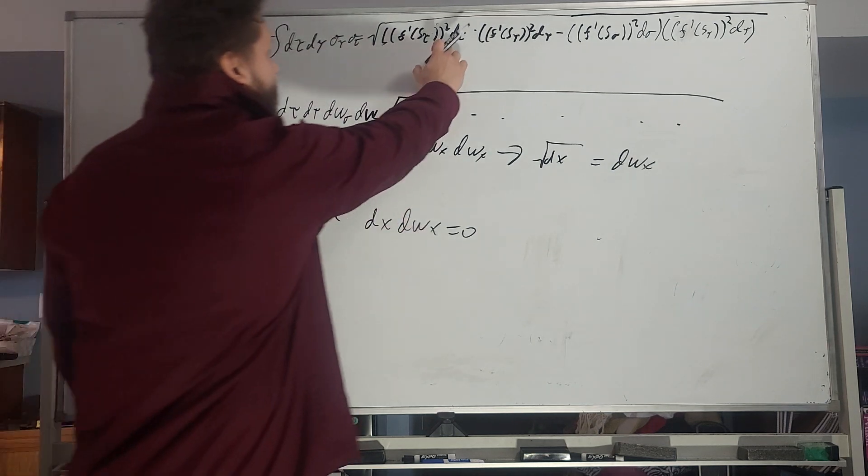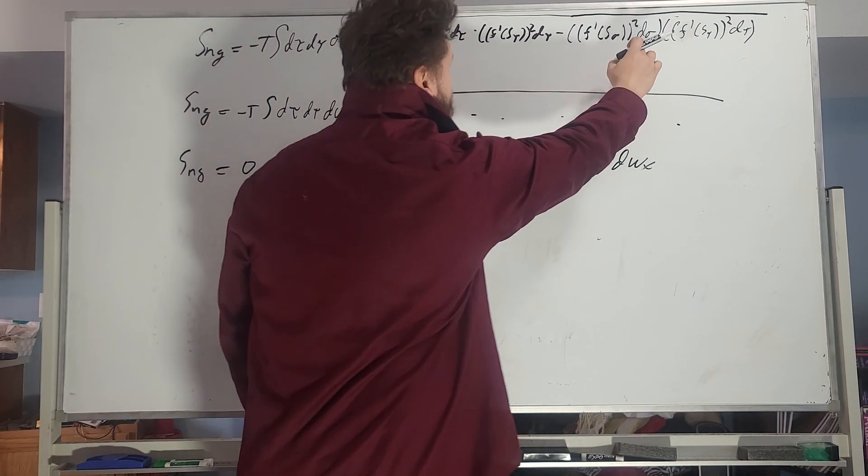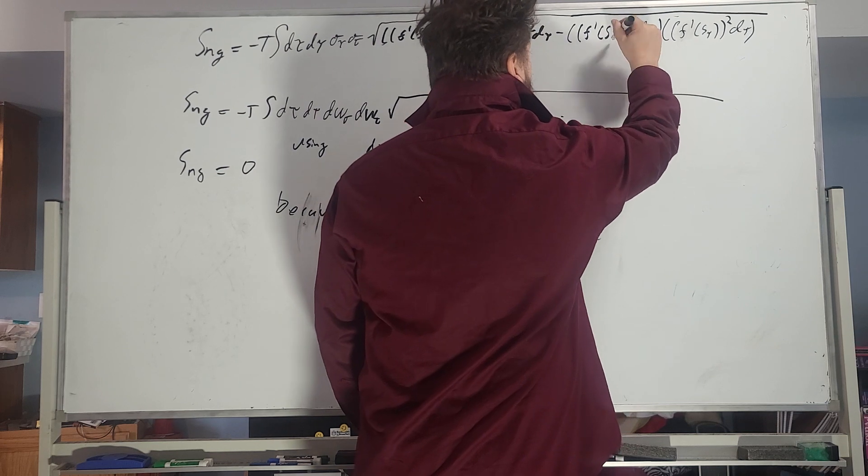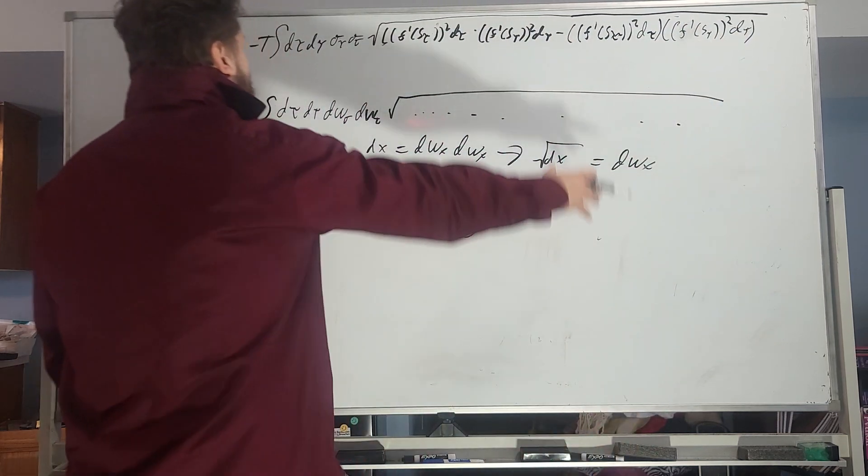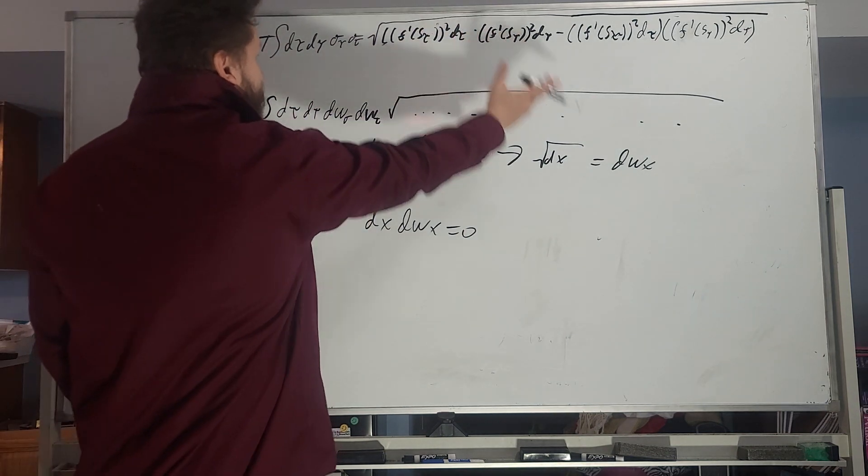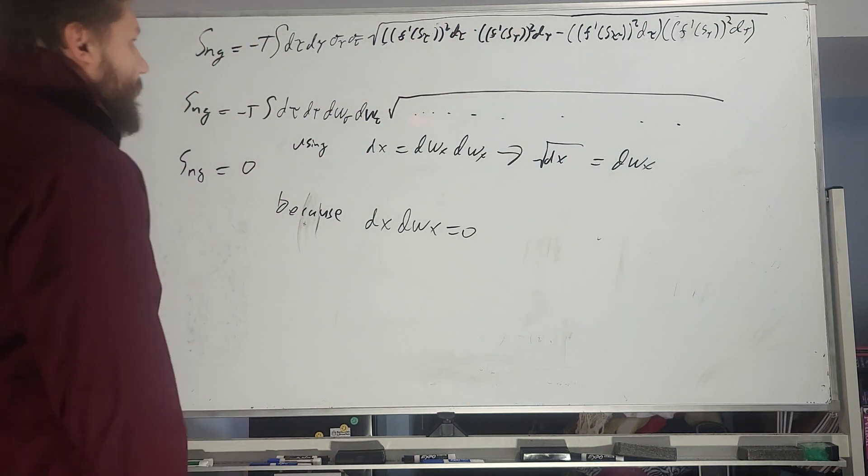So take the D tau, D gamma, D tau, okay, D gamma, we're going to pull them out, and, you know, what's left is just the derivatives of the stochastic processes.